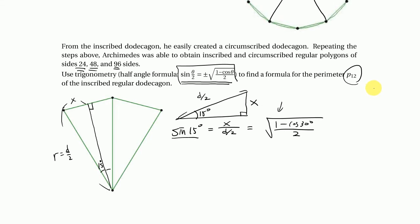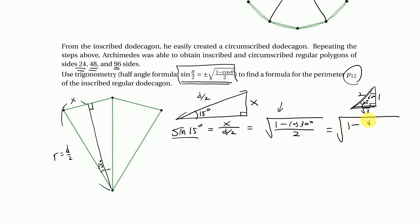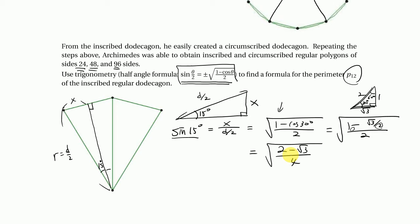What is cos(30°)? From the 30-60-90 triangle, cos(30°) = √3/2. So sin(15°) = √((1 − √3/2)/2) = √((2 − √3)/4) = √(2 − √3)/2.